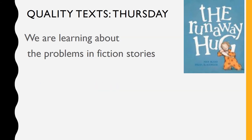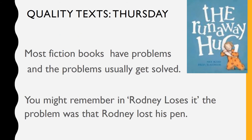Good morning, everybody. Today's Thursday and we are learning about the problems in fiction stories. Most fiction books have problems and the problems usually get solved or fixed. You might remember in Rodney Loses It, the problem was that Rodney lost his pen, but the problem got fixed because Rodney found his pen. Sometimes at the end of a story you might notice the author says something like, 'They all lived happily ever after.' That's a way of telling us that the characters are happy again, and we can call that a happy ending because the problem got solved.